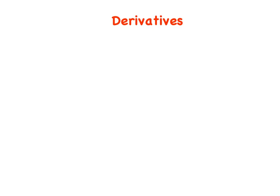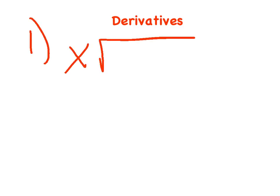Welcome back to our next review topic. It's titled derivatives, but our main goal is to focus on the cleanup of derivatives — factoring out GCFs with negative or fractional exponents. So let's start with a real nice example: x times the square root of x squared minus 4. I want you to pause and take the product rule correctly, and we're going to focus on the cleanup together.